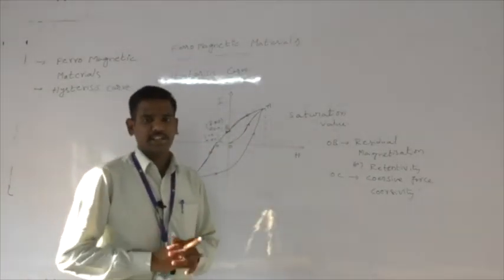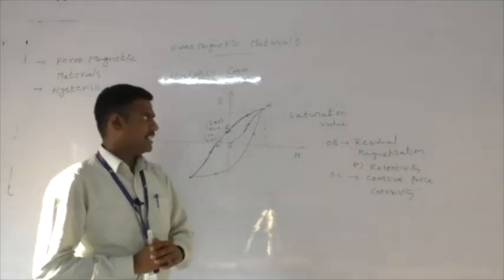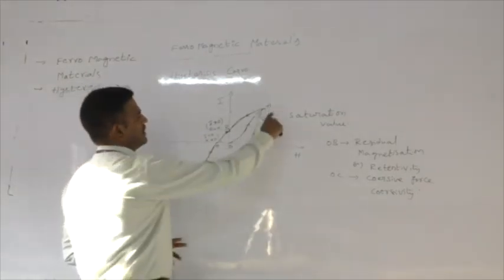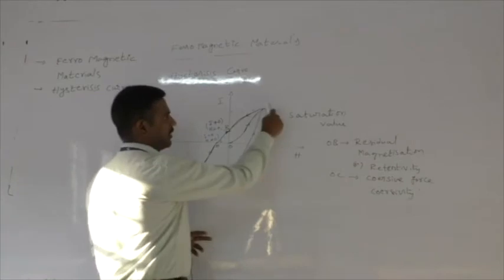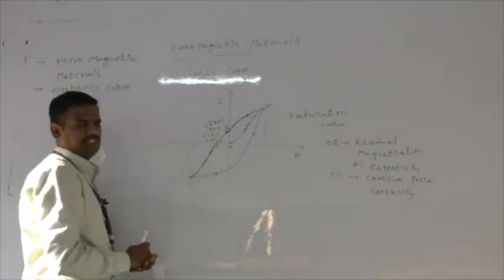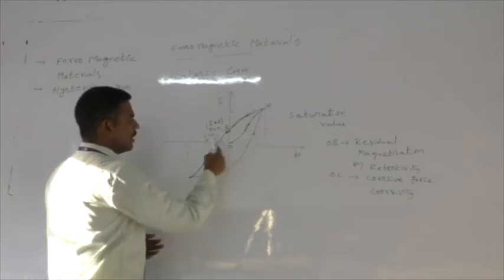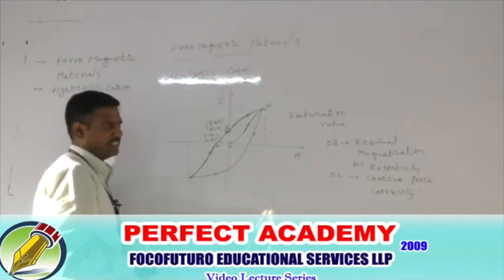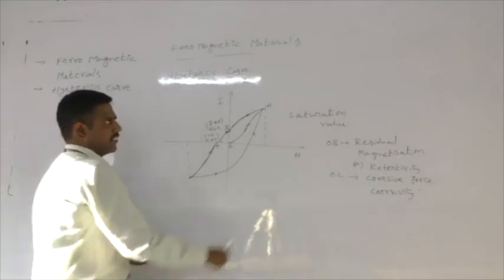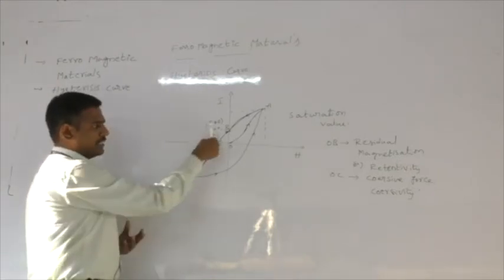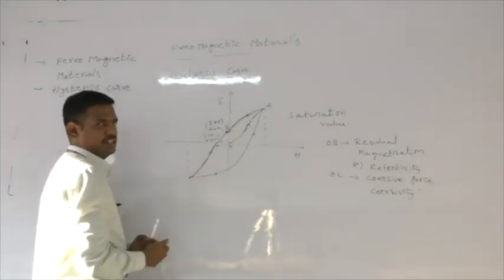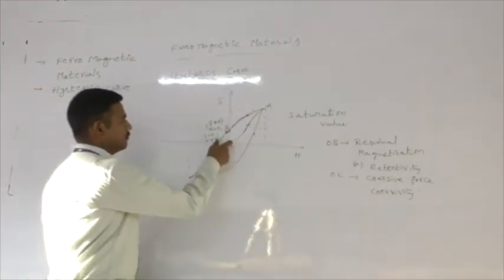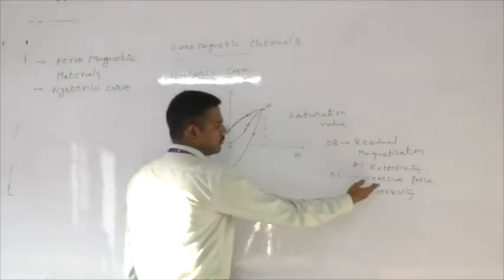The important terms to remember from the hysteresis curve are: positive saturation, where maximum field gives maximum magnetization; negative saturation, where maximum negative field gives maximum magnetization in the opposite direction; OB, which is the residual magnetism or retentivity; and OC, which is the coercive force or coercivity.